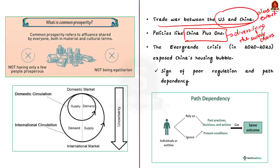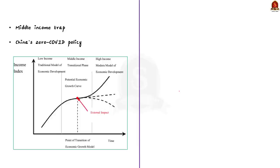The Evergrande crisis in 2020 exposed the vulnerabilities of China's housing market and highlighted inefficiency in the Chinese regulatory mechanism, contributing to economic concerns. The last major impact was the zero-COVID policy — China introduced stringent measures in response to the COVID-19 pandemic, which impacted economic activities and international trade.